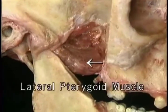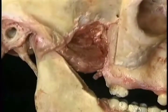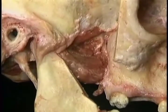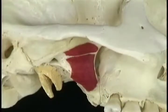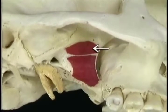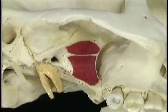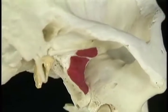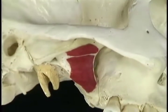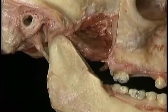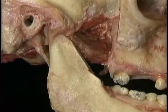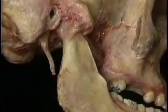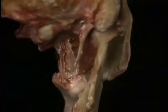Here's the lateral pterygoid muscle. It's quite small. The lateral pterygoid muscle arises partly from the underside of the greater wing of the sphenoid and partly from the lateral aspect of the lateral pterygoid plate. The fibers of the lateral pterygoid muscle run backward and a little laterally.